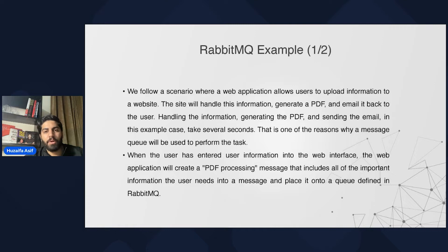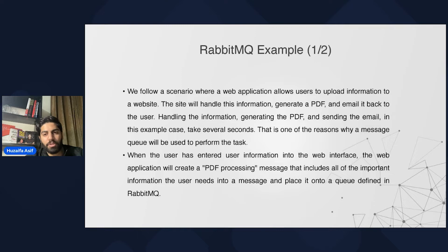Now let's discuss RabbitMQ use cases. Consider a scenario where a web-based application allows users to upload information to a website. The website will handle that information, generate a PDF, and email it back to the user. Handling the information, generating the PDF, and sending the email can take several seconds or even a minute in some cases. So instead of directly processing the information, we take that data, store it in the queue, and then another application reads the data from the queue, processes it, generates the PDF, and sends it back.